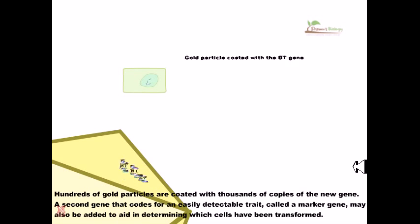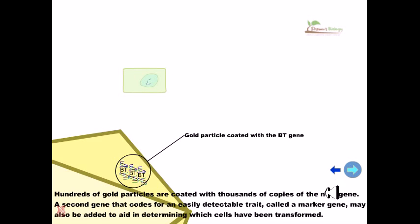Hundreds of gold particles are coated with thousands of copies of a new gene. A second gene that codes for an easily detectable trait, called a marker gene, may also be added to aid in determining which cells have been transformed. We need to visualize whether the gene of our interest is transformed inside the cell or not, so we attach this marker gene with our desired gene.